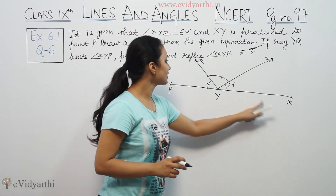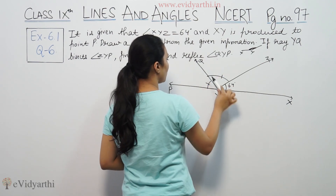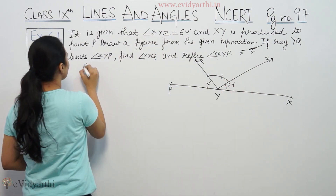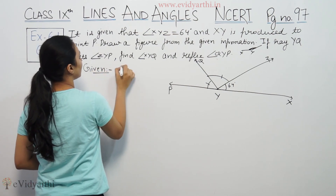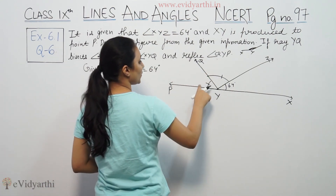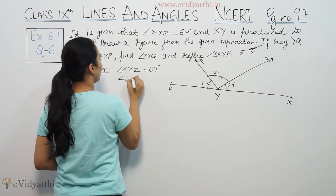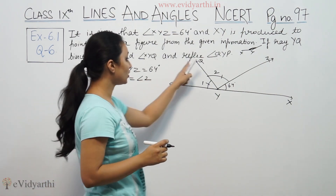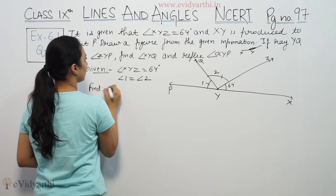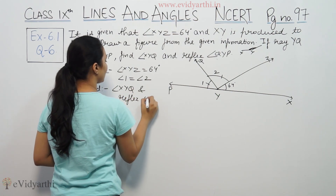We have to find angle XYQ and reflex angle QYP. The given angle XYZ is equal to 64 degrees. We have angle 1 equal to angle 2, since ray YQ bisects angle ZYP.